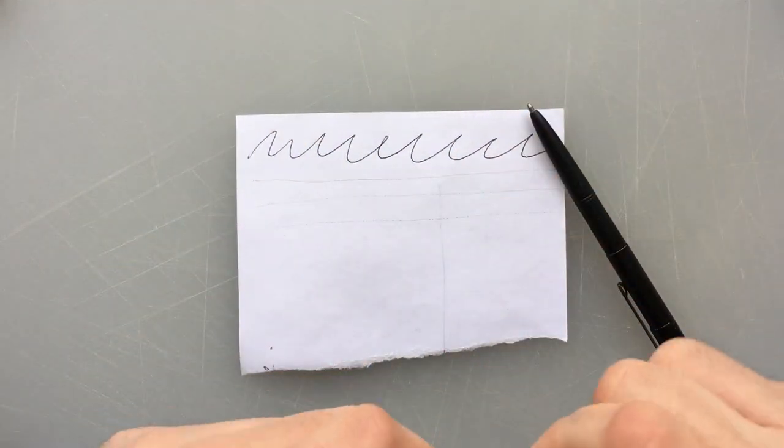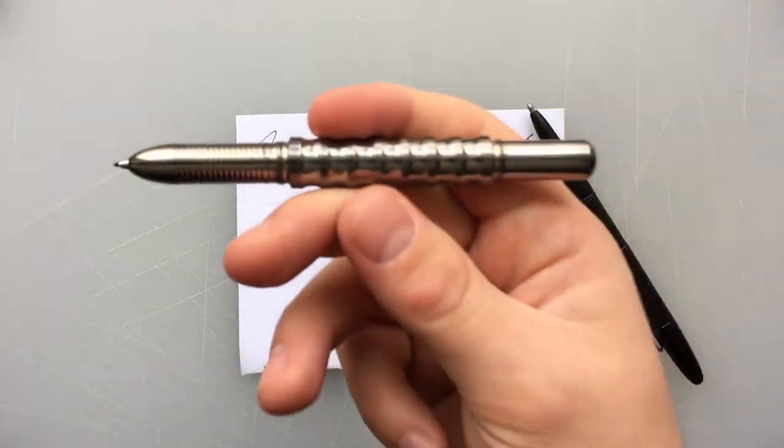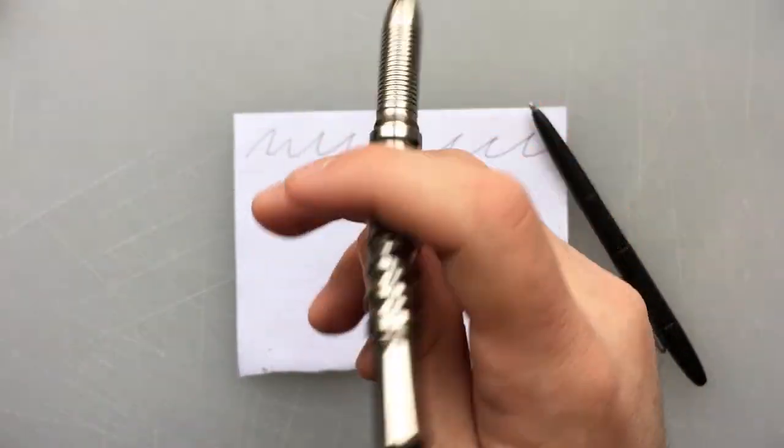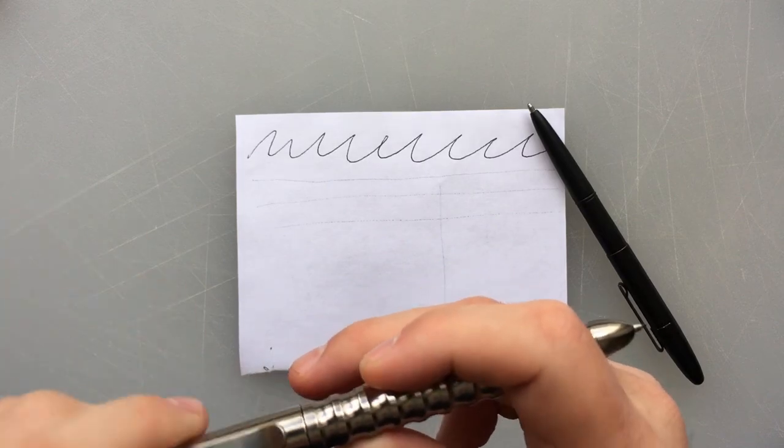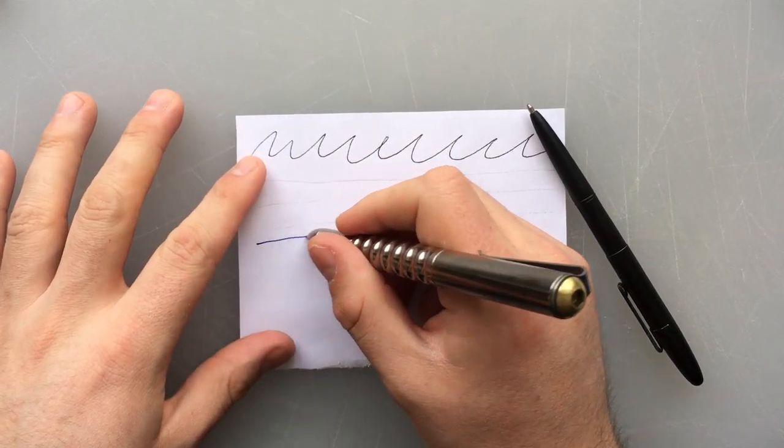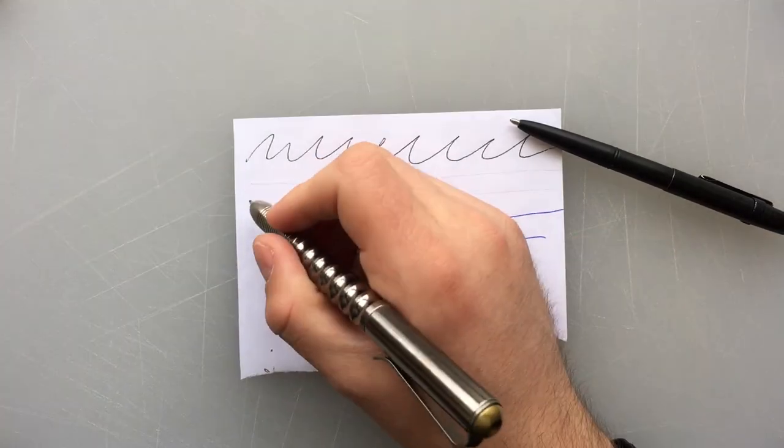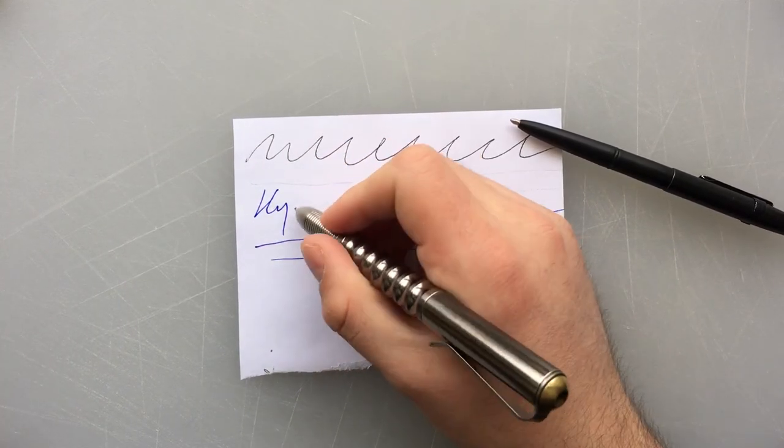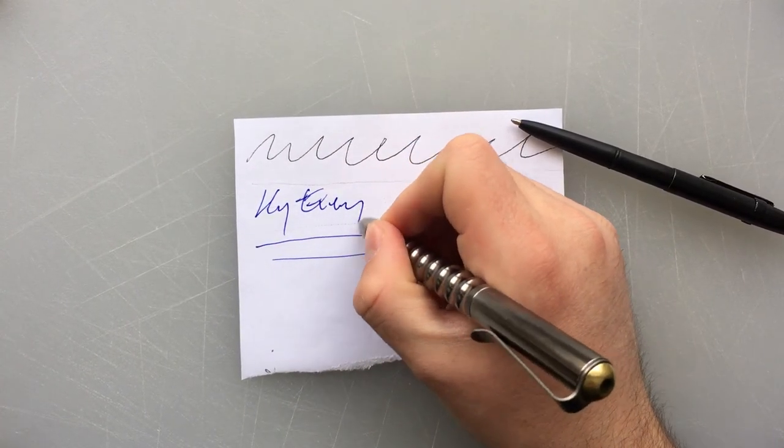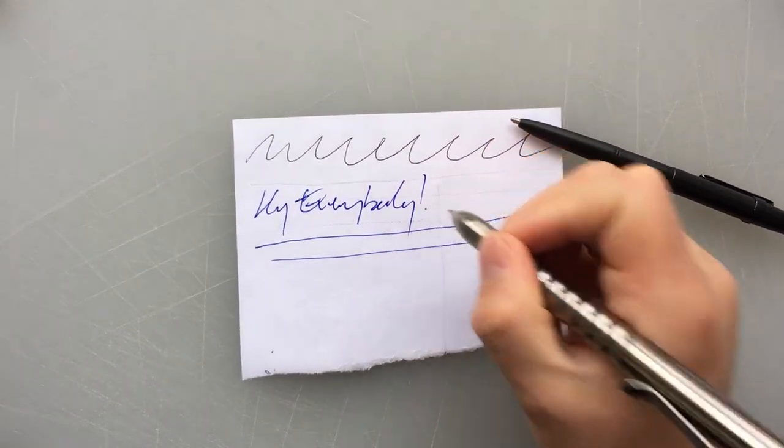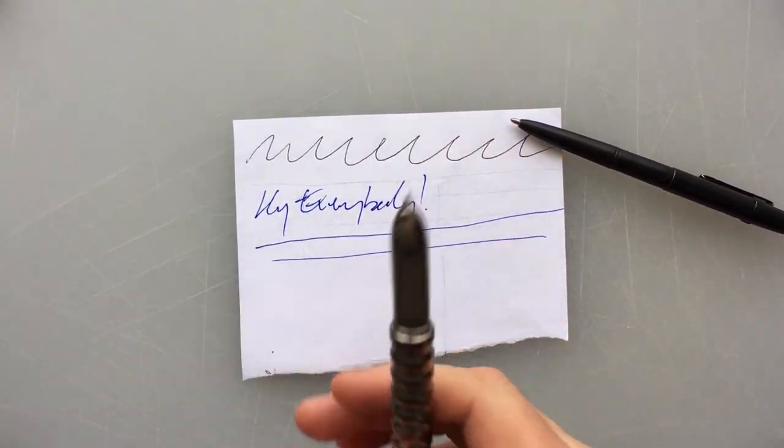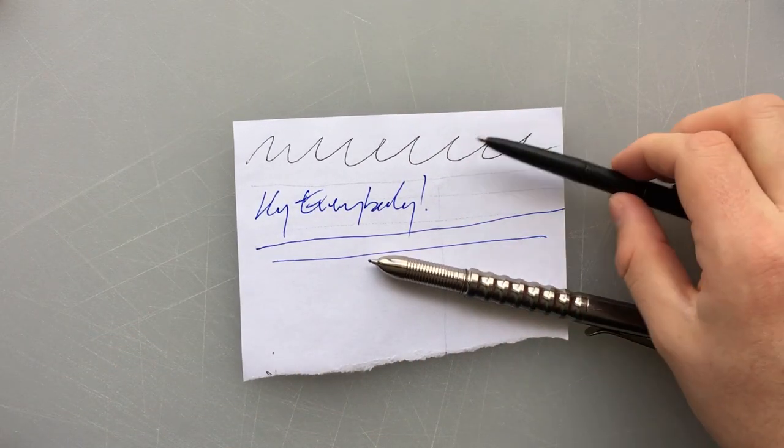Let's compare that to the Montblanc fineliner cartridge installed right now in a Prometheus Writes Alpha pen, which I absolutely love. If I just drag this across the paper, you get a nice full line, which means that you don't need to use any pressure when writing, which is just nice.